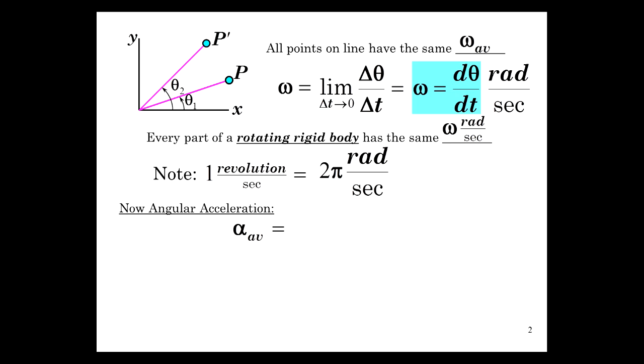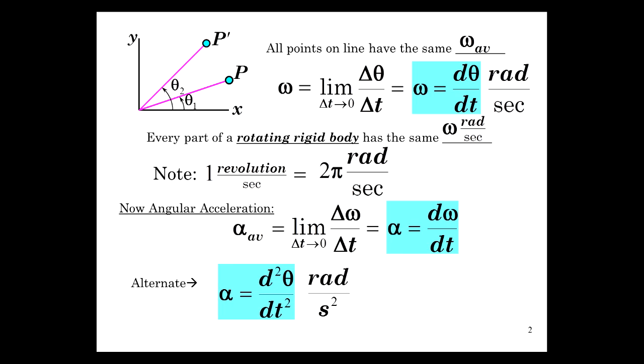And now let's define angular acceleration. Average angular acceleration alpha average is the limit as delta T approaches zero of delta omega delta T, the change in angular velocity over time. So alpha is d omega dt, just like acceleration is dv dt. Alternate way to consider this is say alpha is the second derivative of the position vector, the position equation I should say. So alpha is d squared theta dt squared, radians per second squared, just like acceleration is the second derivative of position with respect to x.